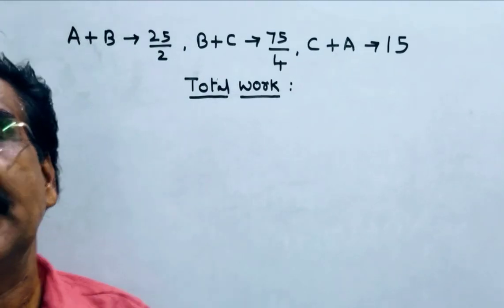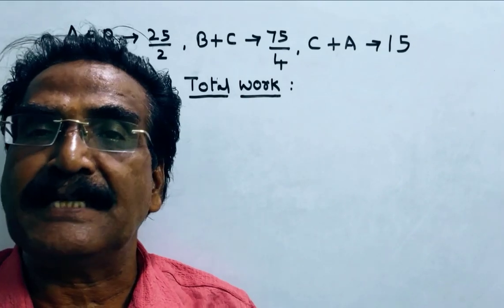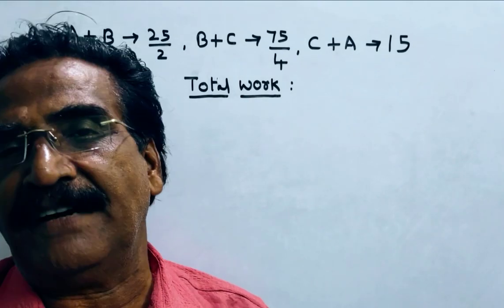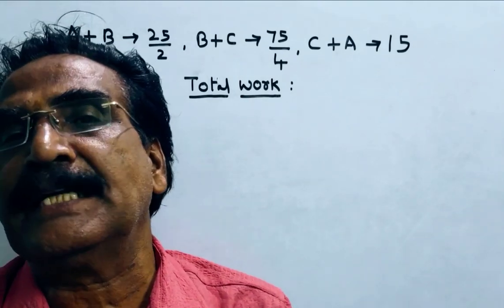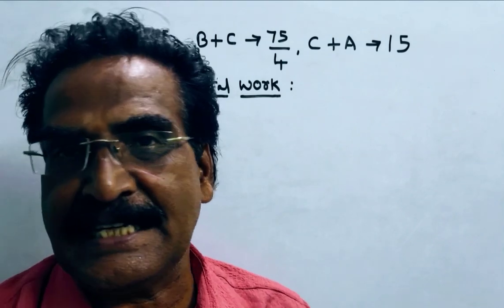Here the question is in how many days A plus B plus C plus D can do the work where D is 40 percent as much efficient as C.